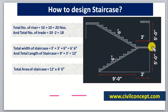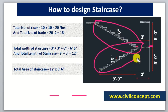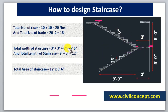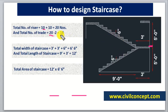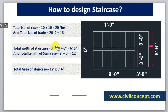For the full staircase, both flights are identical. Total number of risers = 10 + 10 = 20. Total number of treads = 20 − 2 = 18, because we subtract 1 from each flight. If we count, we get 18 treads total.